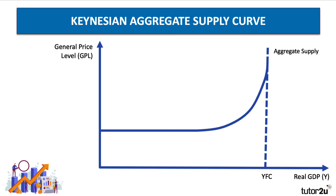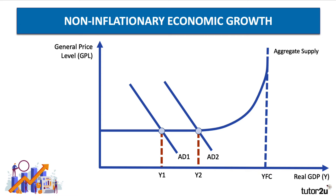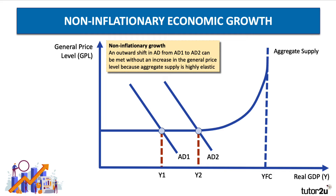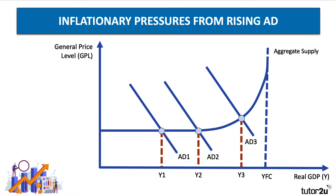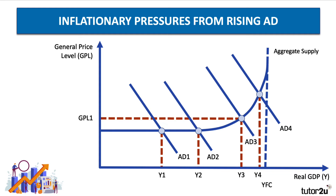So what does this mean if we think about the shape of a Keynesian aggregate supply curve? Well, first of all, when demand is low — AD1, for example — giving national income of Y1, aggregate demand can increase to AD2 without there being any major pressure on inflation. So it's possible to get non-inflationary economic growth as we move from Y1 to Y2. An outward shift in AD here can be met without an increase in the general price level because aggregate supply is highly elastic. This is sometimes known as demand-pull inflation.